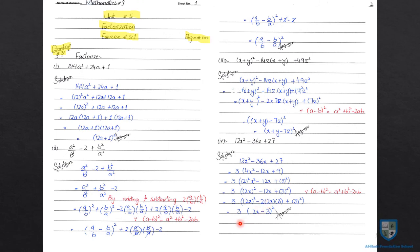3 into 2X minus 3 whole square — यह 3 into (2X minus 3) whole square factors होंगे 12X square minus 36X plus 27 के. तो यह हमने question number 3, exercise 5.1 का solve कर लिया. 5.1 के questions की ऐसे ही factorization की है, जैसे हमने class 7 में exercise 10a और 10b में questions solve किये थे. आज के lecture में हमने exercise 5.1 का question number 3 solve कर लिया. Next lecture में इंशाअल्लाह हम question number 4 और question number 5 solve करेंगे. اللہ حافظ